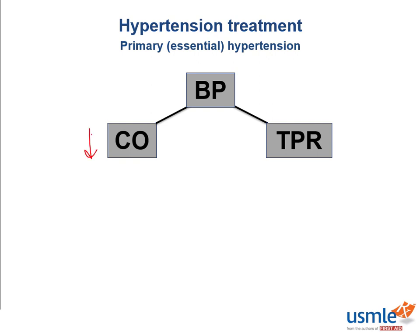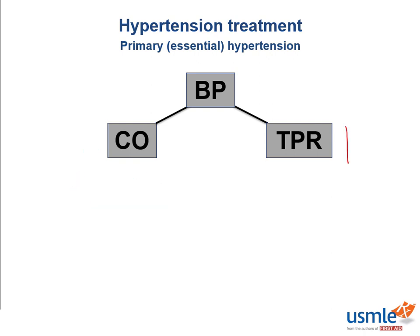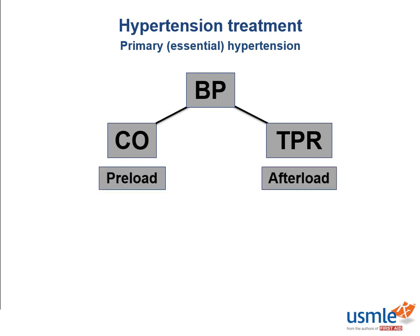We can decrease cardiac output by giving drugs that change venous tone or blood volume returning to the heart, thereby decreasing preload. We can also give drugs that relax vascular smooth muscle tone, thereby leading to a drop in afterload. We can directly target vascular smooth muscle cells with nitrovasodilators, or indirectly inhibit them by decreasing the renin-angiotensin-aldosterone system or the sympathetic nervous system.